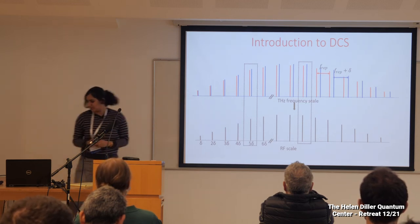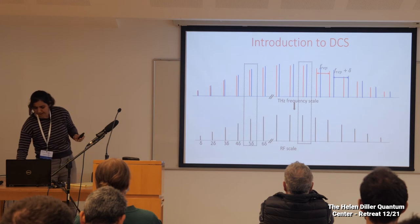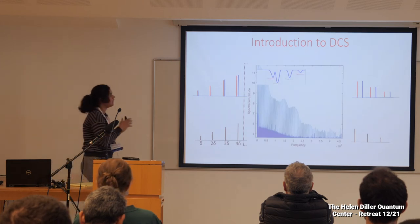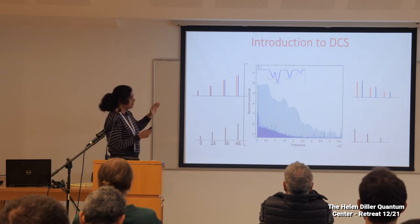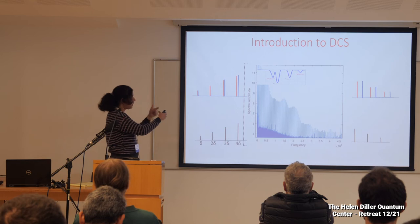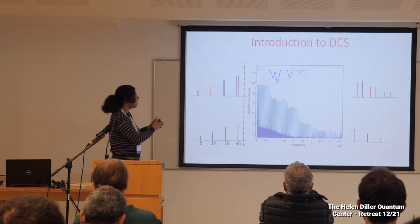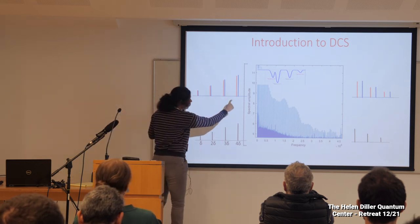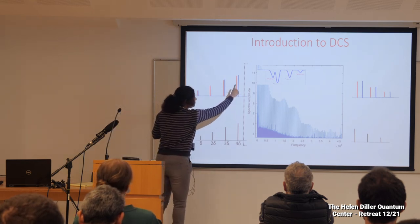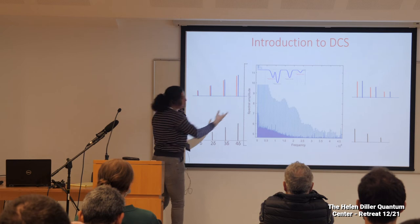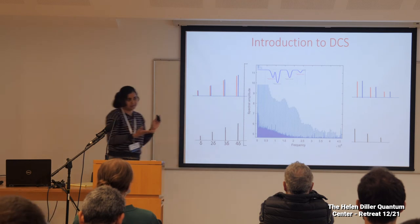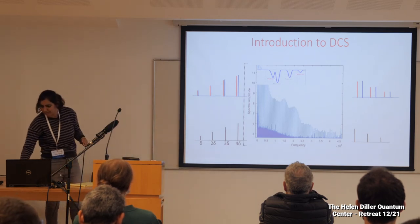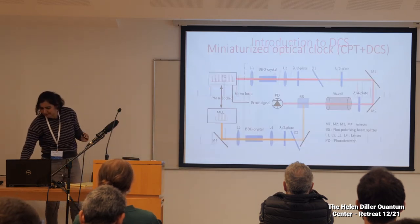I put the rubidium atoms in the path of one of the combs. Right now the result is not very clean, but you can still see some dips due to the rubidium atoms. It's just the first measurement and I'm trying to improve on it.